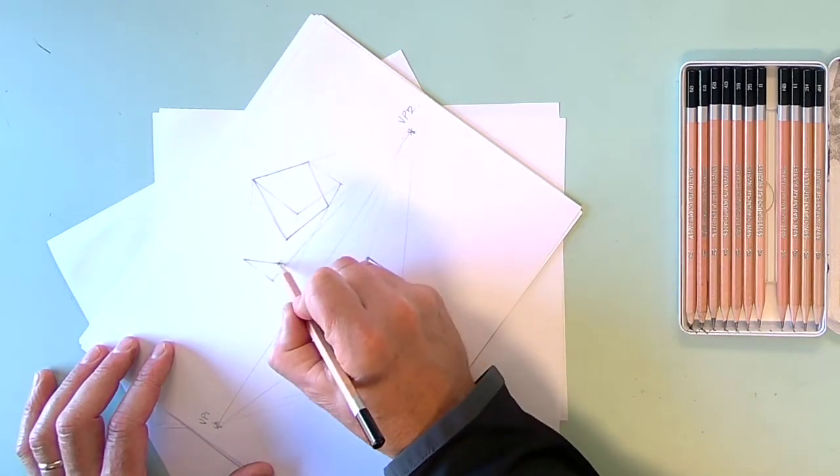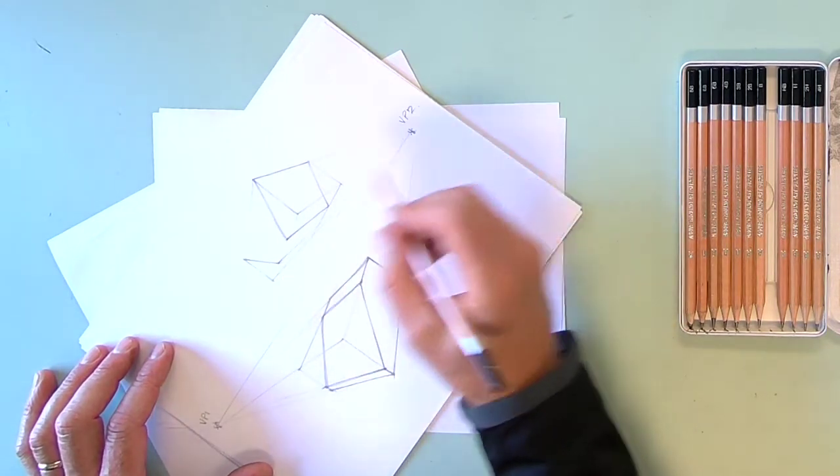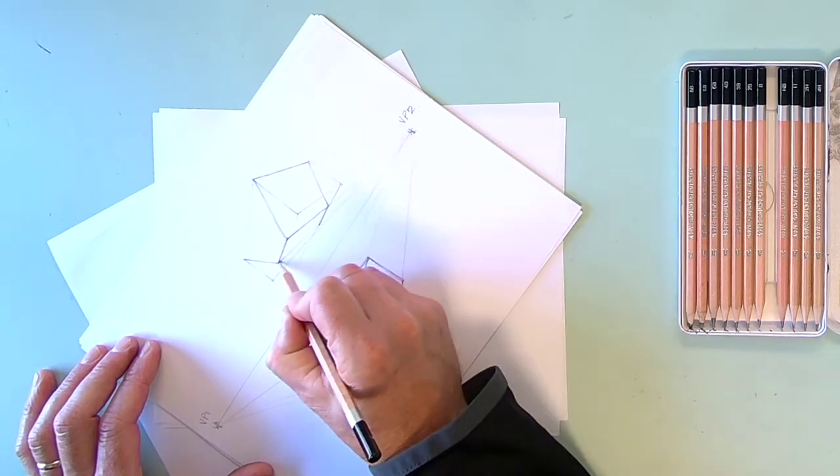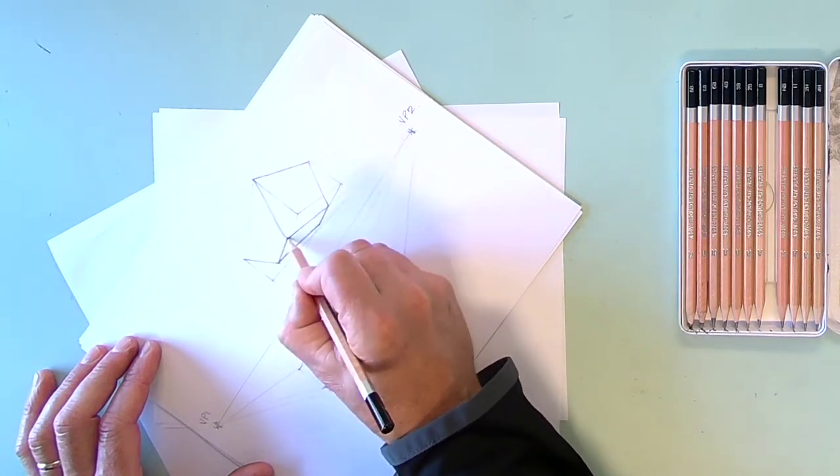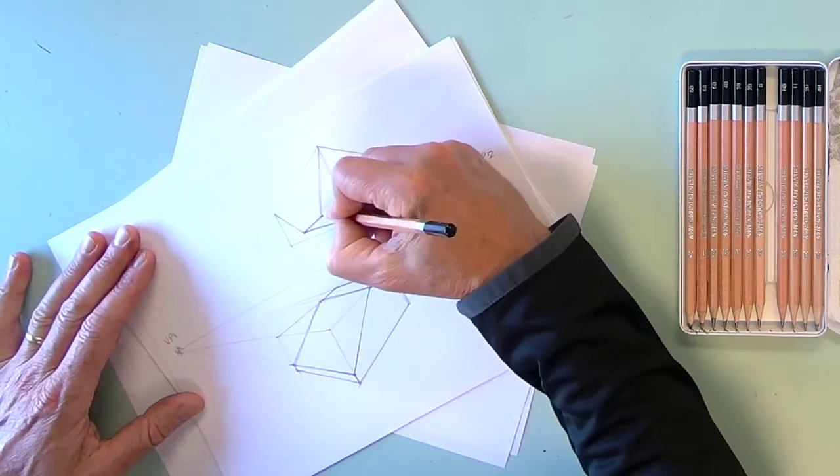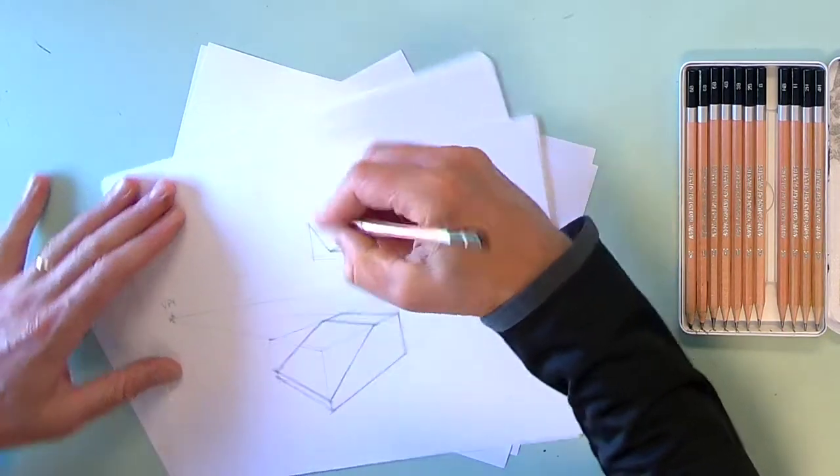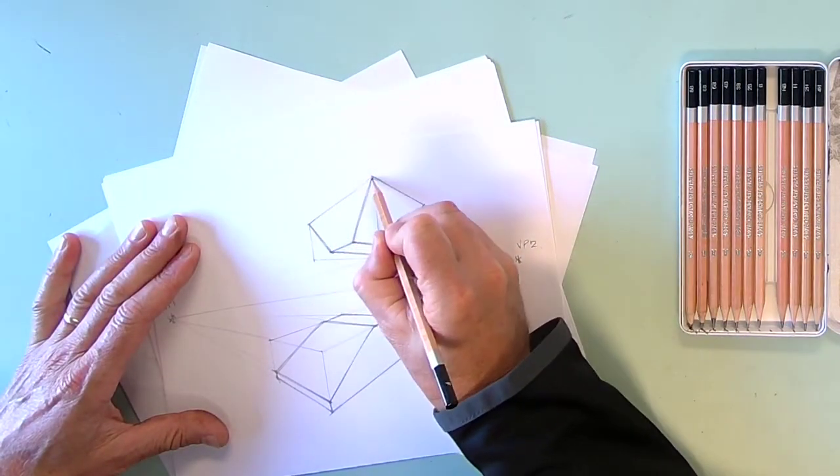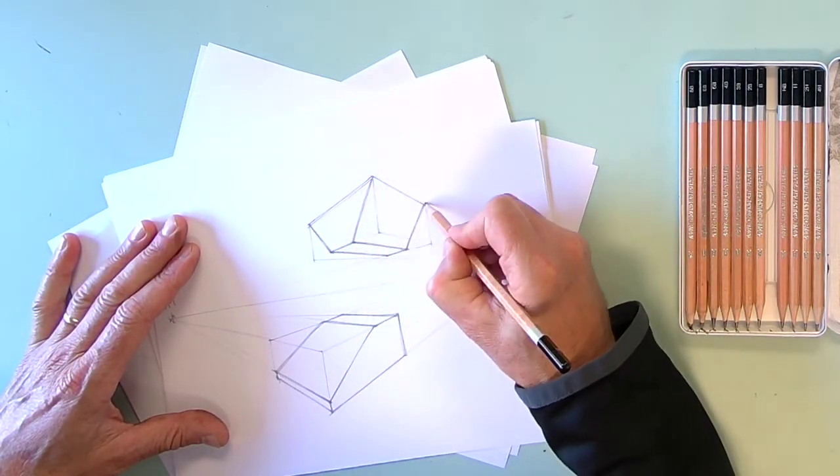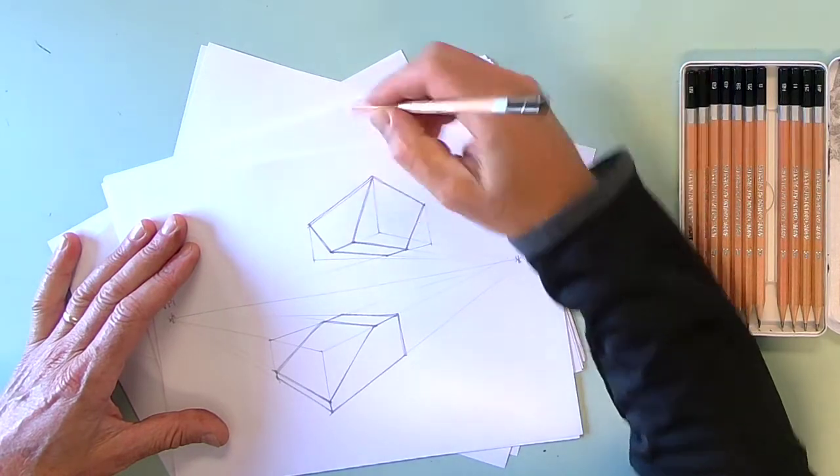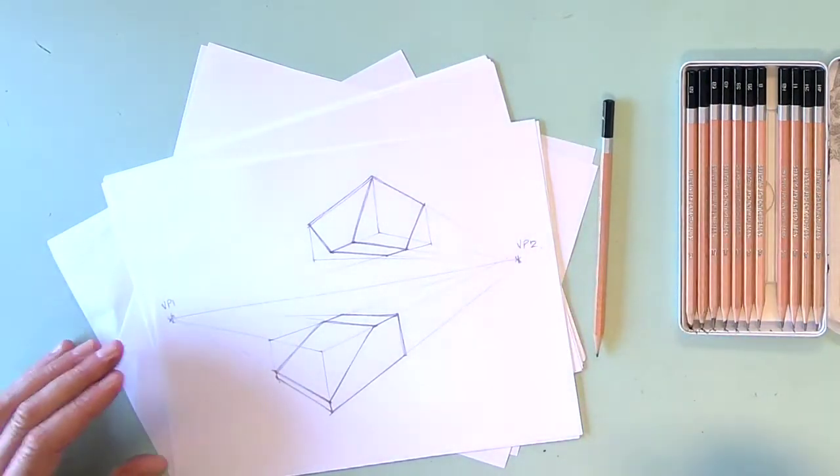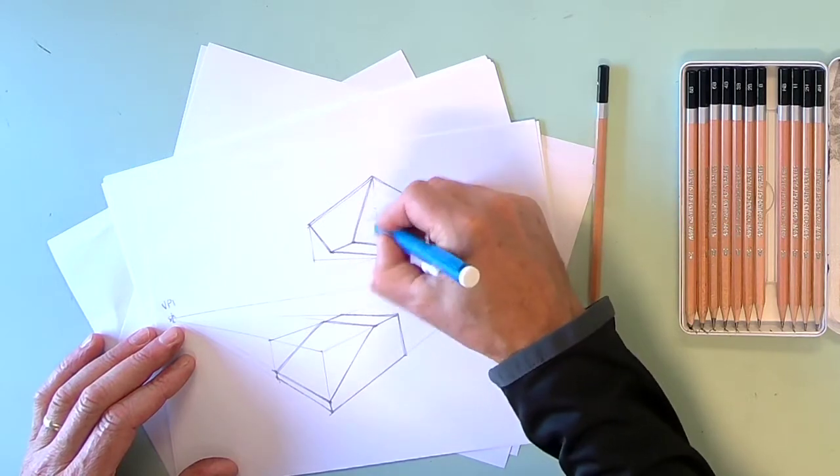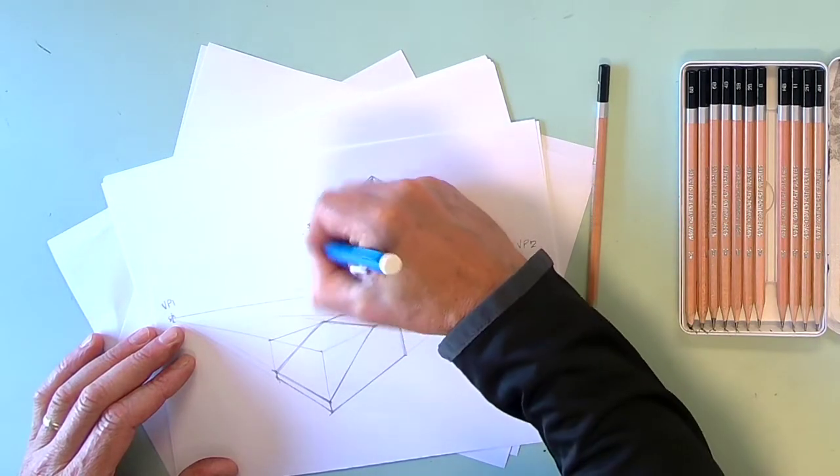And then that one will also go to VP2. So now as I darken it up, you'll see this box has got two slices taken away. This side here, because it's behind it, I can't see it very well. Okay. If I wanted to make it look more obvious, I could obviously erase out some of these lines.